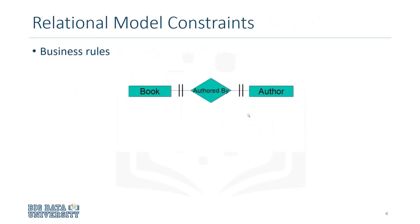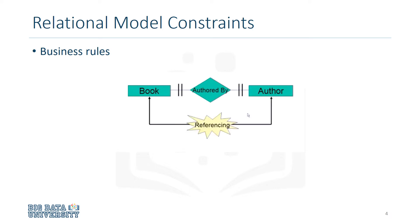Within any business, data must adhere to certain restrictions or rules. In this lesson we will use the book and author example. At least one author writes one book — this is a one-to-one relationship. To look up the author information, the book entity refers to the author entity. To look up the book information, the author entity refers to the book entity. In a relational data model, this is called referencing.